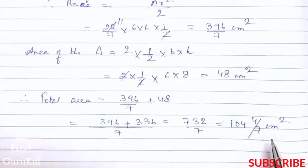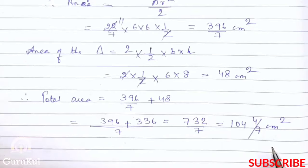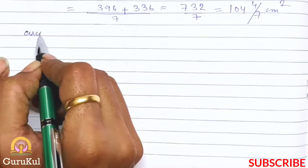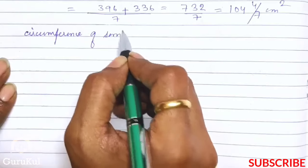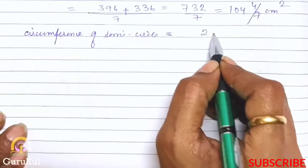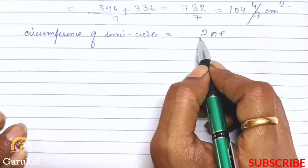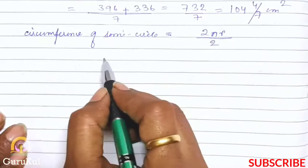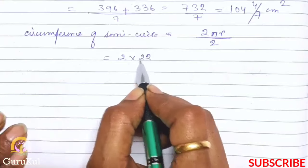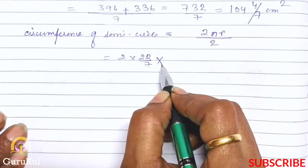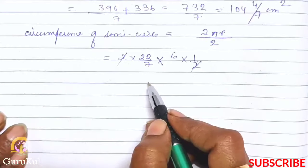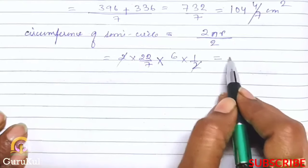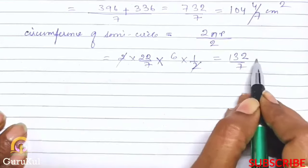Area mil gaya. Ab hum log nikalenge circumference of the figure - that is the length of the boundary, perimeter. Circumference of semicircle is equal to 2 pi r divided by 2. So 2 into 22 by 7 into r, r is 6, into half. 2 and 2 got cancelled, giving 132 by 7 centimeter.